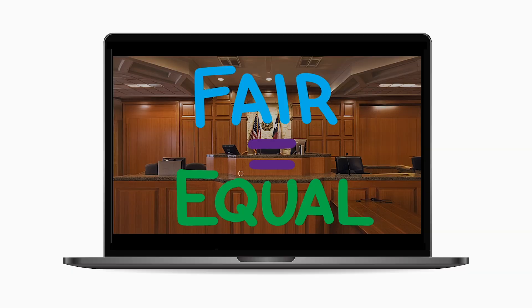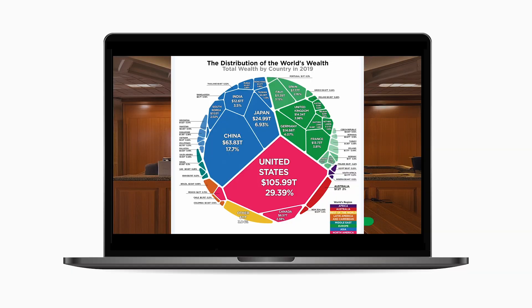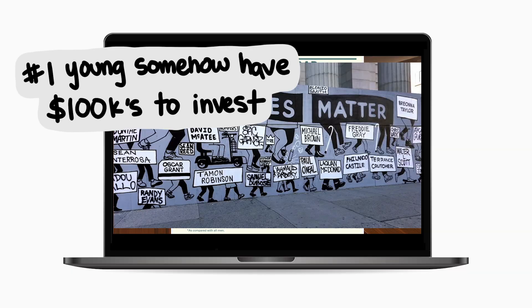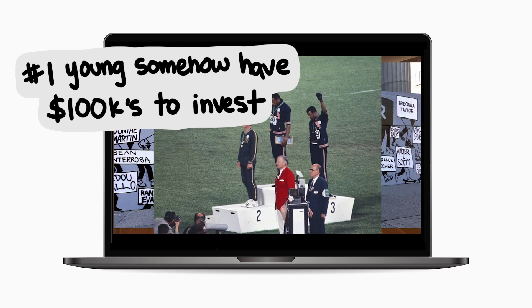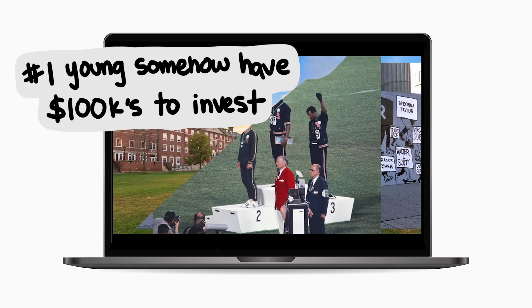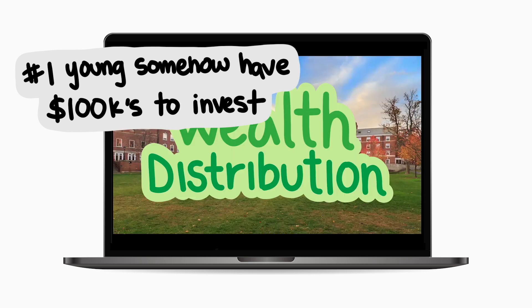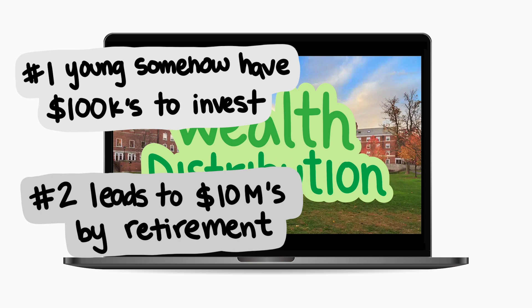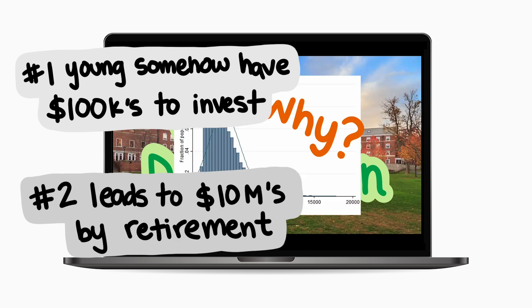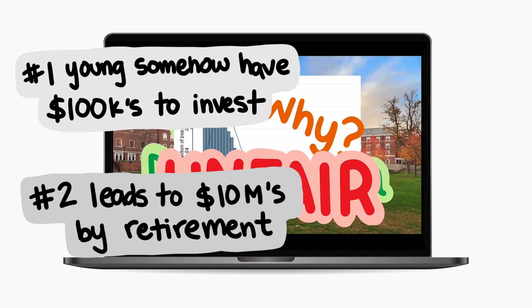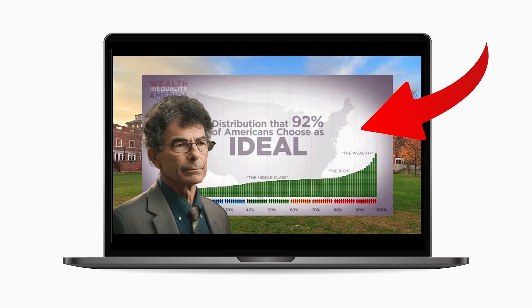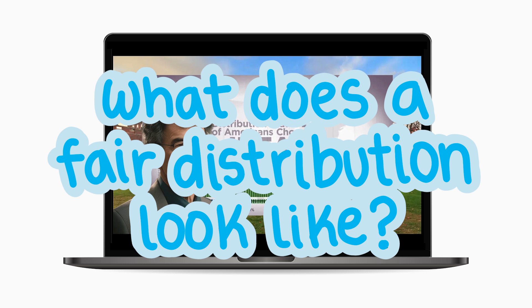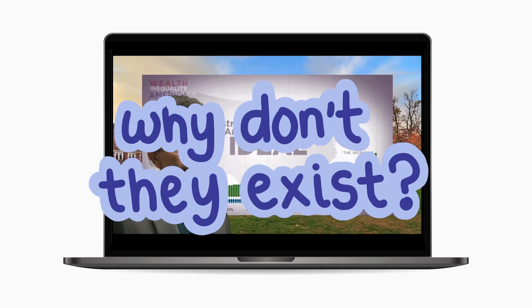In our last video, we explained the main problems with such an equal distribution. It means that young households somehow already have hundreds of thousands of dollars in wealth to invest, which can then lead to tens of millions of dollars by retirement, all while the oldest households in the distribution have, at most, a couple million dollars for retirement. So if this supposed ideal distribution is not fair, what does a fair distribution look like, and why don't they seem to exist in the real world?